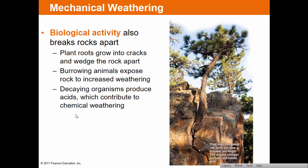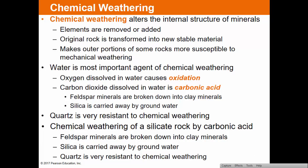Biological weathering is when living things break rocks apart — plant roots grow into cracks and pry rocks open, burrowing animals expose rock to increased weathering, and decaying organisms produce acids that contribute to chemical weathering. Chemical weathering is different from mechanical weathering — it alters the internal structure of minerals through chemical reactions. Elements can be added or removed, and the rock is transformed into a more stable material. It also weakens outer portions of rocks, making them more susceptible to mechanical weathering.